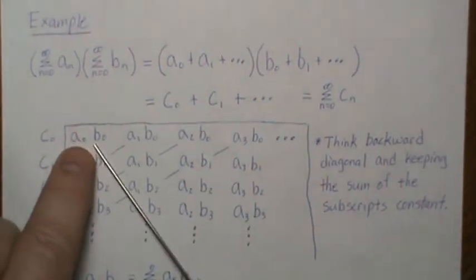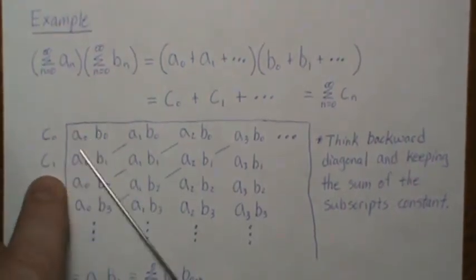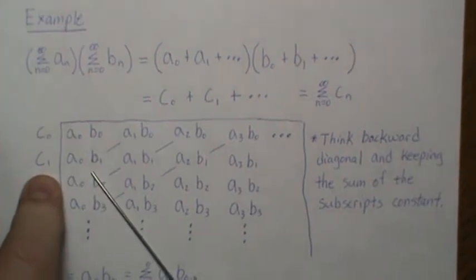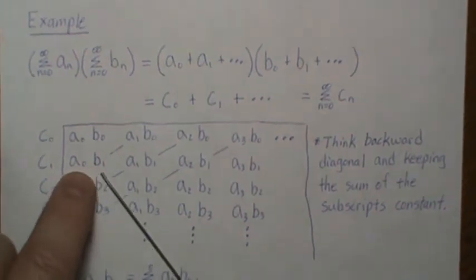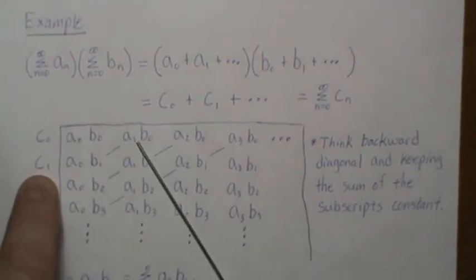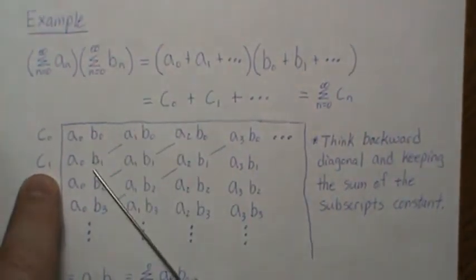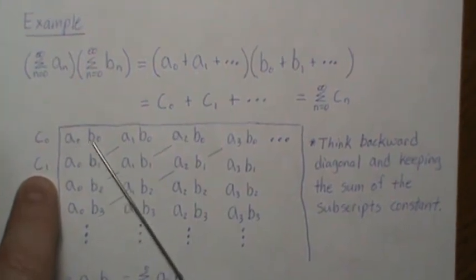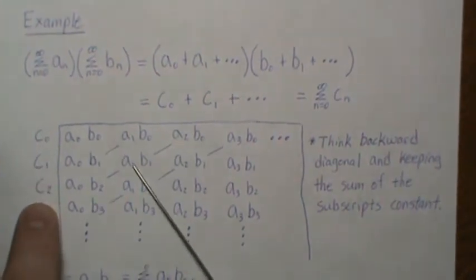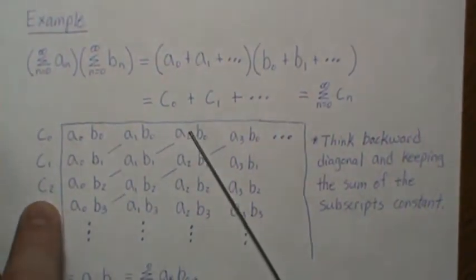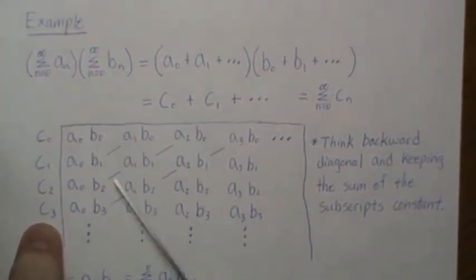Think about a backwards diagonal and keeping the sum of the subscripts constant. So c₀ means we want all the terms where the subscripts add to zero, and there's only one term. c₁ are all terms where the subscripts add to one. So zero plus one is one, so this is in the c₁ term. It's actually just an up diagonal, so there's only two terms. c₀ represents this term, c₁ is the addition of these two terms, c₂ is the addition of these three terms, c₃ is the addition of these four terms.